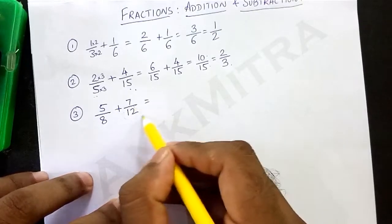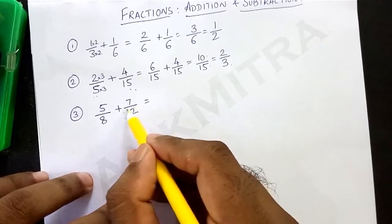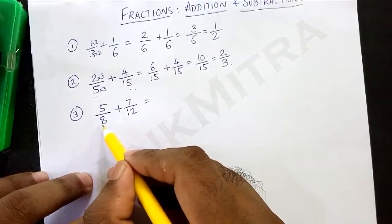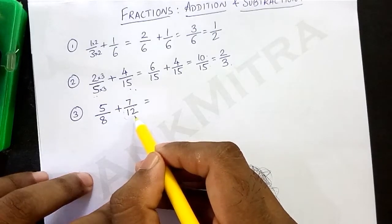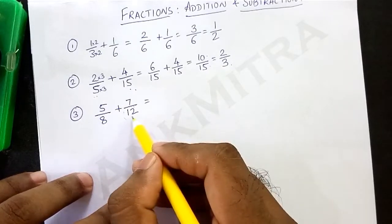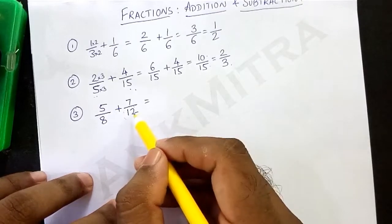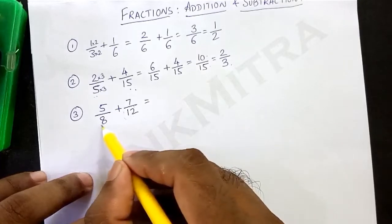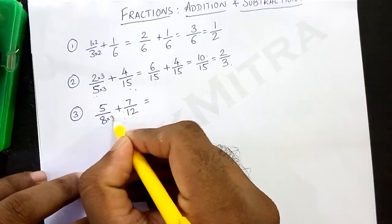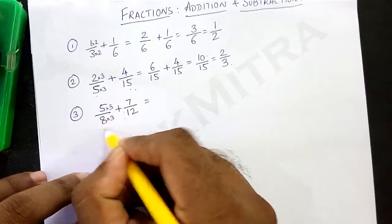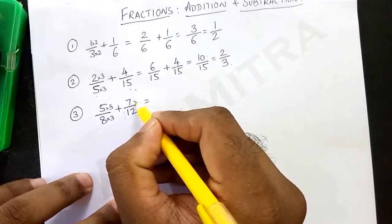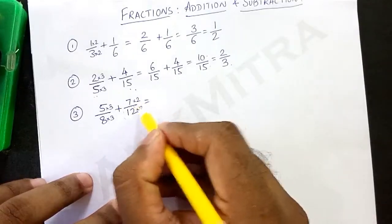The easy way to do it is to recite the table of 12 and check where 8 fits in. So, 1 times 12 is 12 — it does not fit. 2 times 12 is 24, and 24 is present in the table of 8. So 8 three times is 24, and 12 two times is 24. So 24 will be the number used for the denominator. We need to convert both denominators into 24. The first fraction we will multiply by 3 for both numerator and denominator to get the denominator as 24. For the second fraction, it will be multiplied by 2 for both numerator and denominator to get the denominator at 24.